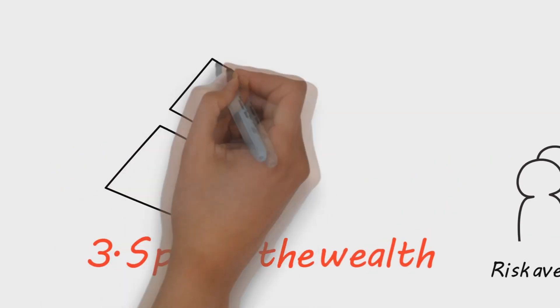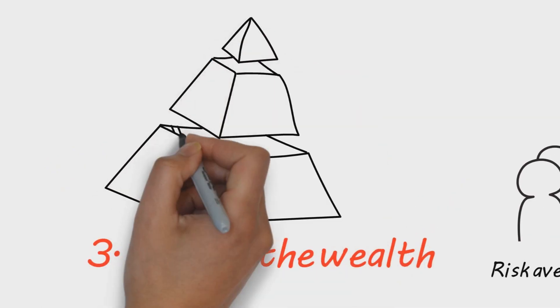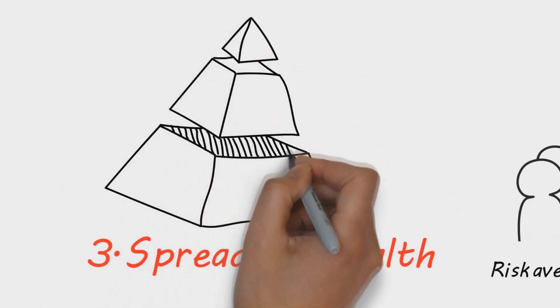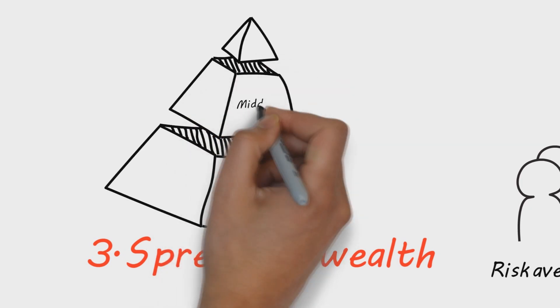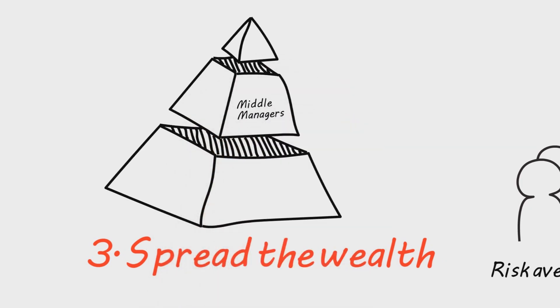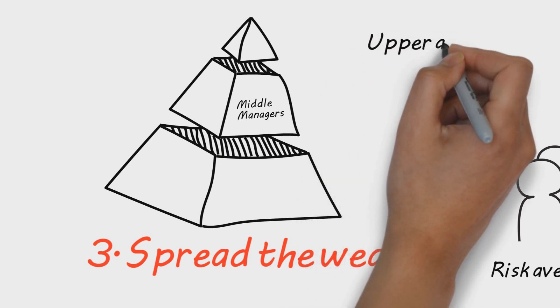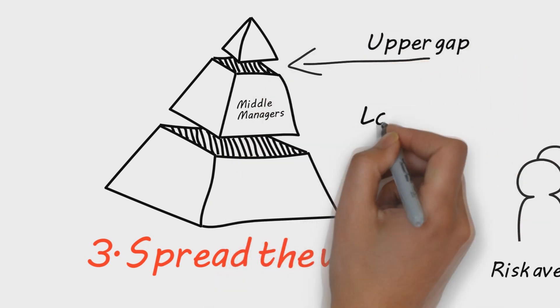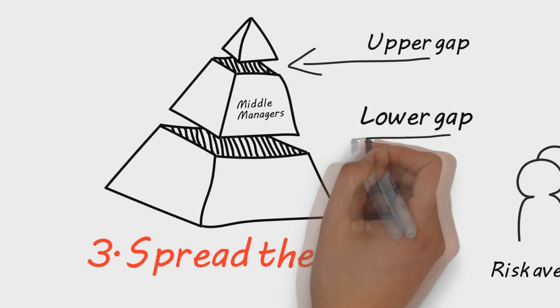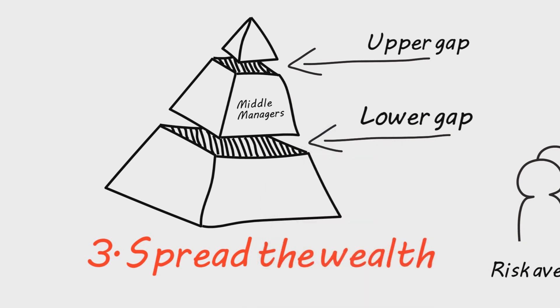Lesson three: spread the wealth. There has been a lot of attention on executive pay and who tops the list of CEO millionaires. However, our research shows that rank-and-file employees care more about the pay gap between them and middle managers.